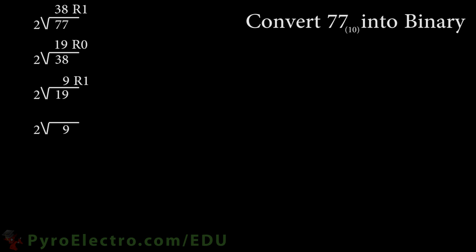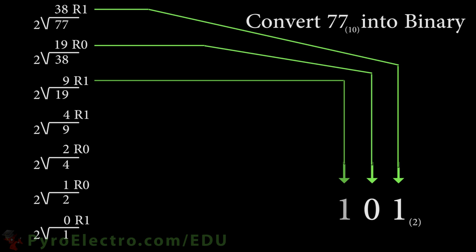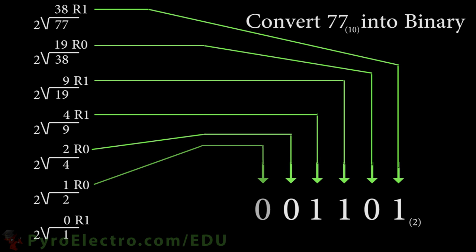Bring the nine down, nine divided by two equals four, remainder one. Bring the four down, four divided by two equals two, remainder zero. Bring the two down, two divided by two equals one, remainder zero. Bring the one down, and one divided by two equals zero, remainder one. Now, we put all of the remainders next to each other over here, and we find that the binary representation of 77 is 1001101.